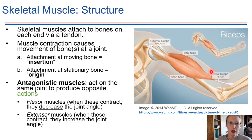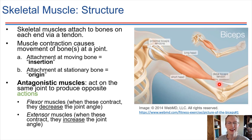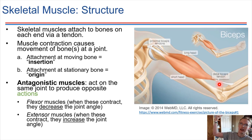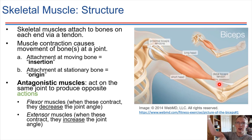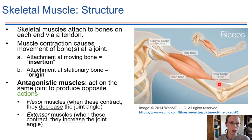When we contract the biceps, the joint around the elbow moves. When we talk about flexion versus extension: flexion is when you contract your bicep and your arm flexes — the joint angle is decreasing at the elbow. Extension is defined by increasing the joint angle. Flexion versus extension all has to do with what's going on at the joint.